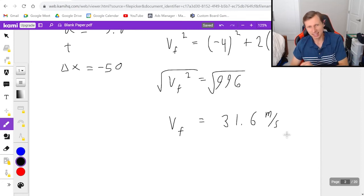So the final velocity of the ball when it hits the ground is 31.6. And again, that's not true. Why not? Because we know that this ball, when it hits the ground, is moving downwards. So this answer should be negative 31.6. But how on earth would we have known that?